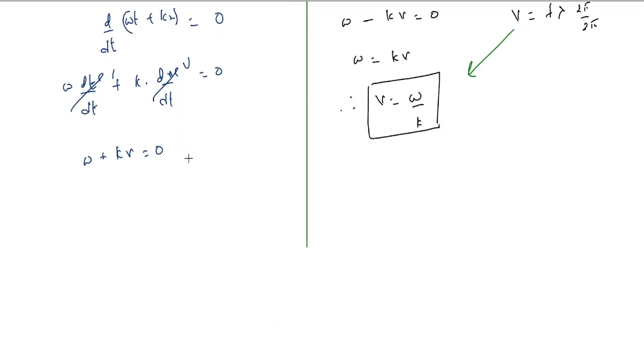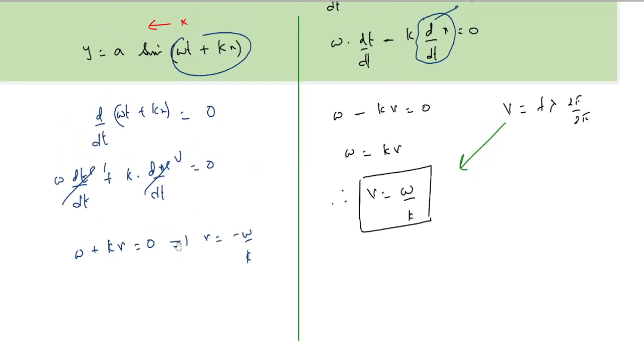So whenever in the phase term a plus sign is present, it means the particle or the wave energy moves along the negative x direction. This is what is the wave velocity.